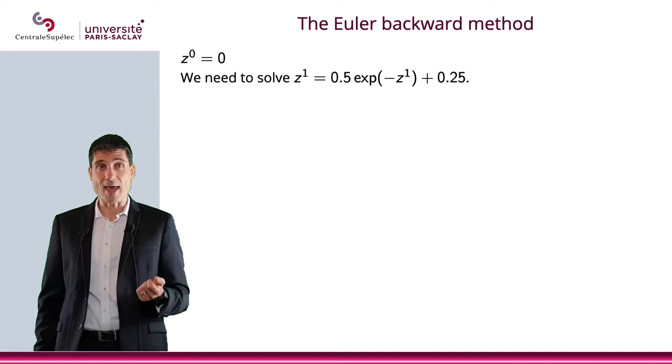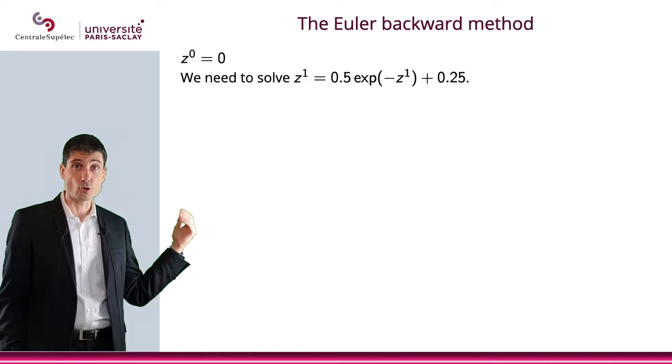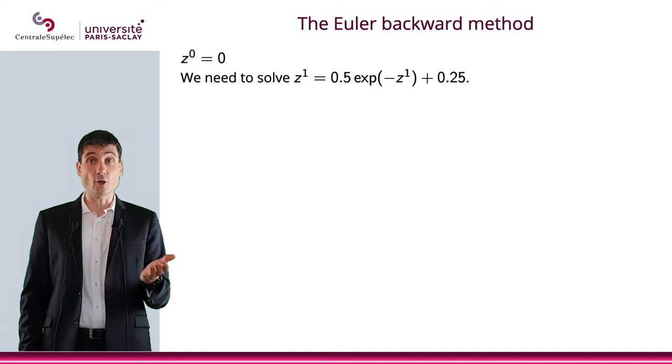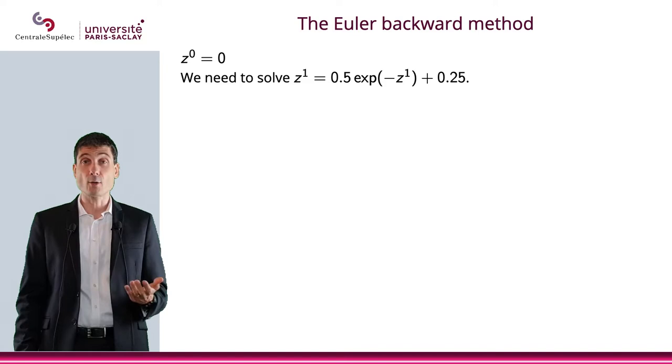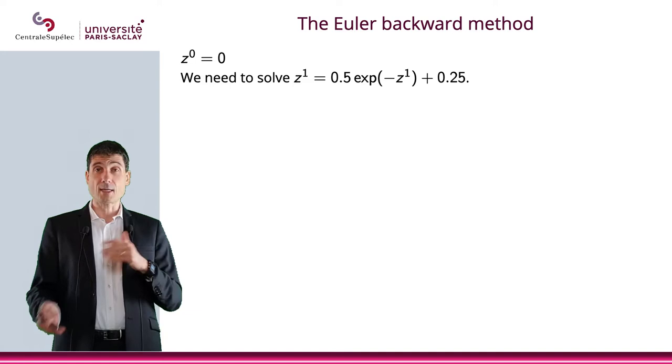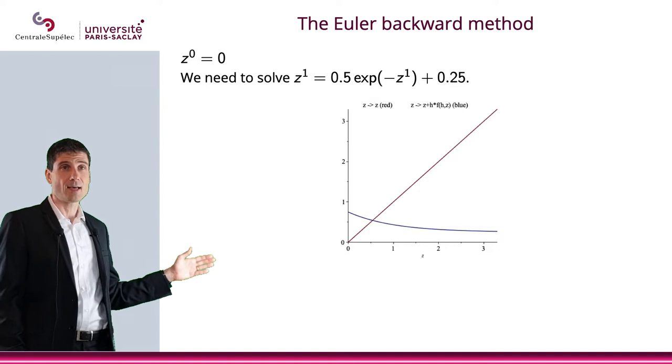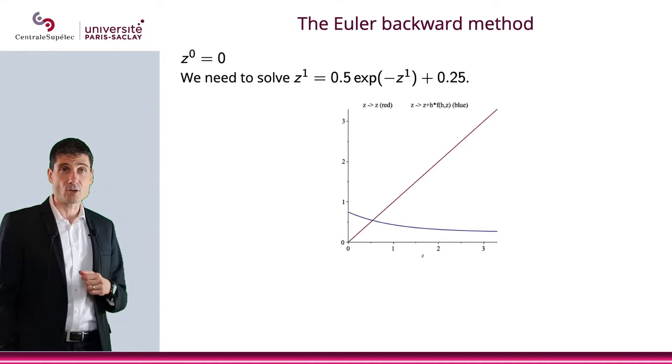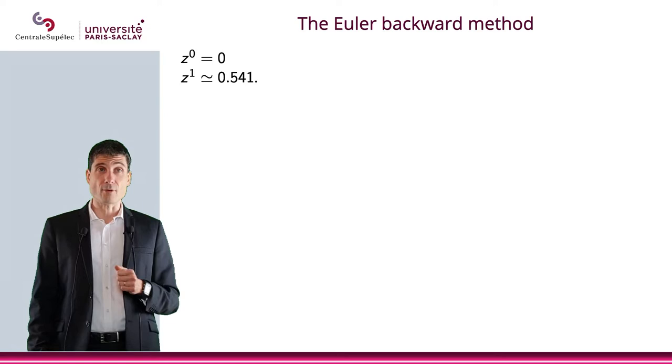We'll consider a mesh on [0, 2] with h = 0.5, exactly as we did for the Euler forward method. z⁰ = 0, that's a no-brainer. Let's find z¹. So z¹ will be 0.5 times e⁻ᶻ¹ + 0.25. I need to solve this equation. I won't be able to solve it explicitly, so I will use any method to solve a very simple equation—you might know the Newton method or the bisection method. Here are the two curves. It intersects numerically at 0.541. So I found z¹ = 0.541.